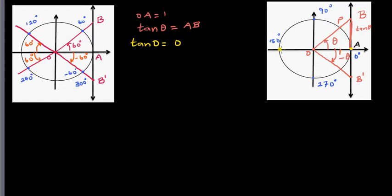At 180 degrees, the particle has moved anti-clockwise and come to 180. You join this point with A, and again the length of AB is 0. That's why tan(180°) = 0. We'll confirm this on the calculator.